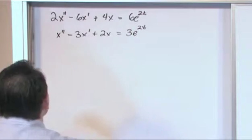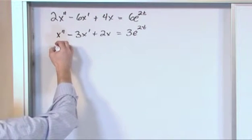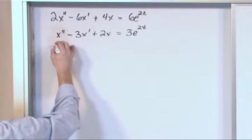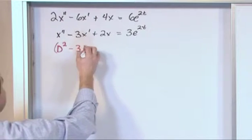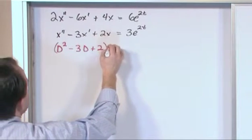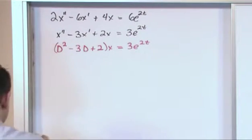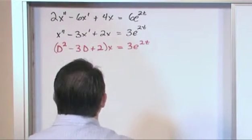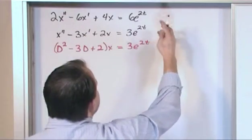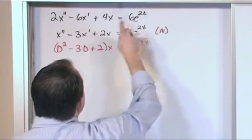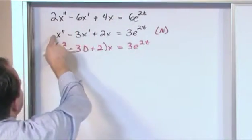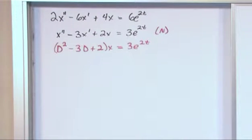Next we're going to put it in operator notation. So we'll have D squared minus 3D plus 2 operating on x equals 3e to the 2t. So before I go any further, I'm going to label the second equation the non-homogeneous version. Yes, this is the original problem, but really you want to work with what you have after you put it in standard form.